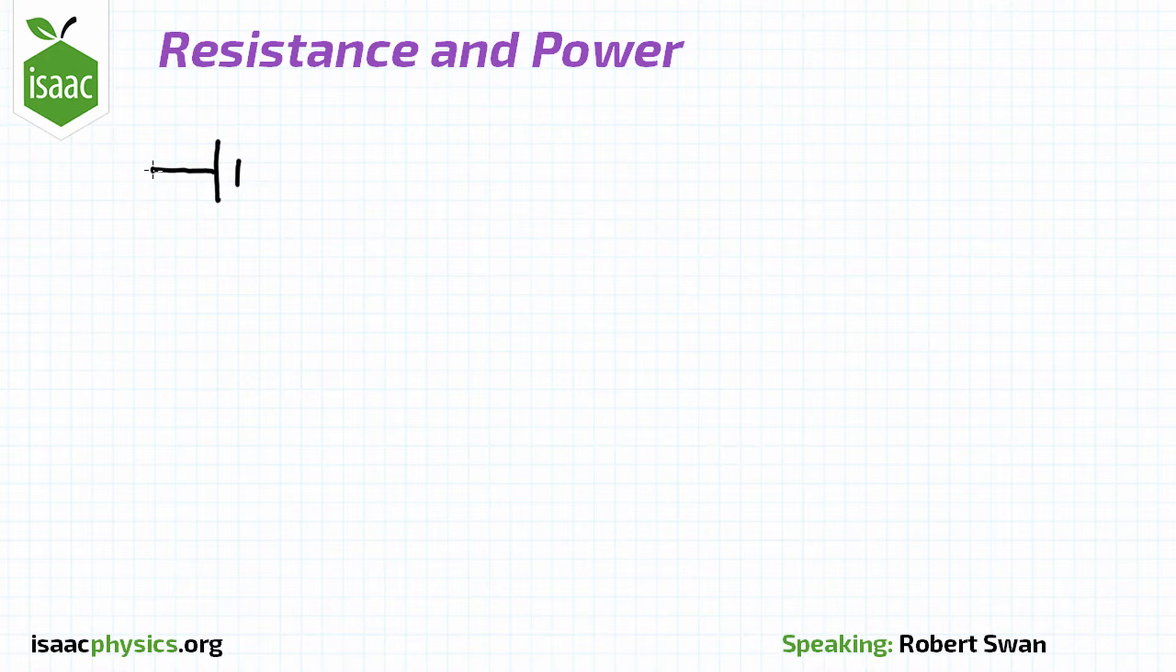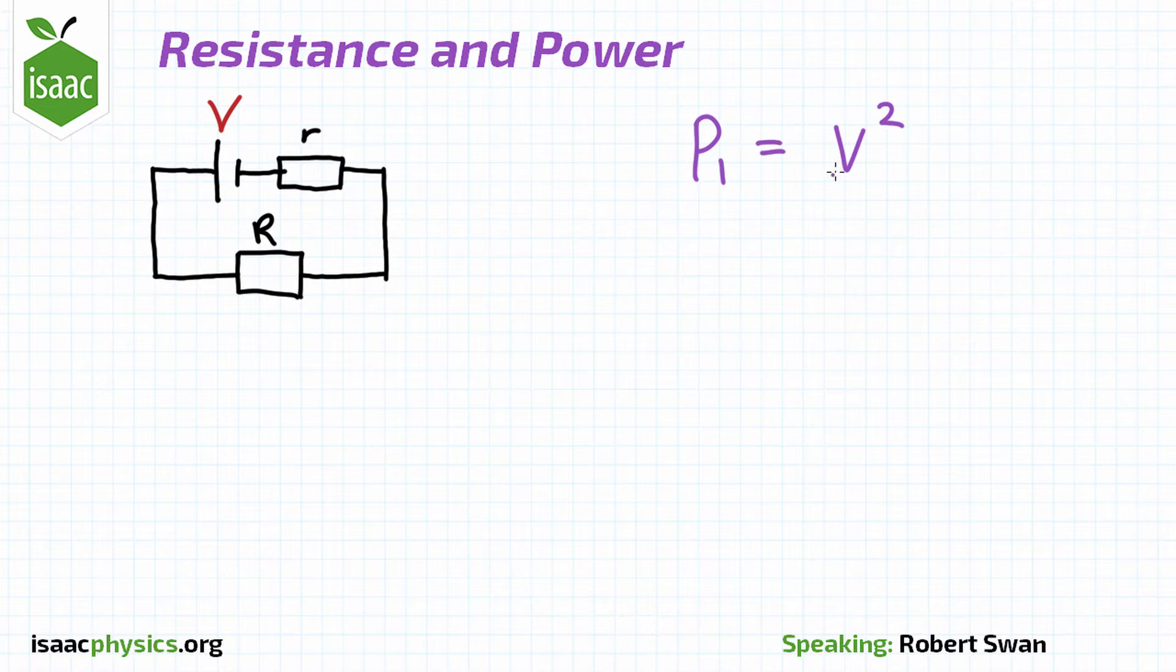Let us first find the power dissipated when one cell is connected, P1. Since the resistors are in series, their effective resistance is uppercase R plus lowercase r. There is potential V across them, so to find P1 we can use the formula P equals V squared over R.